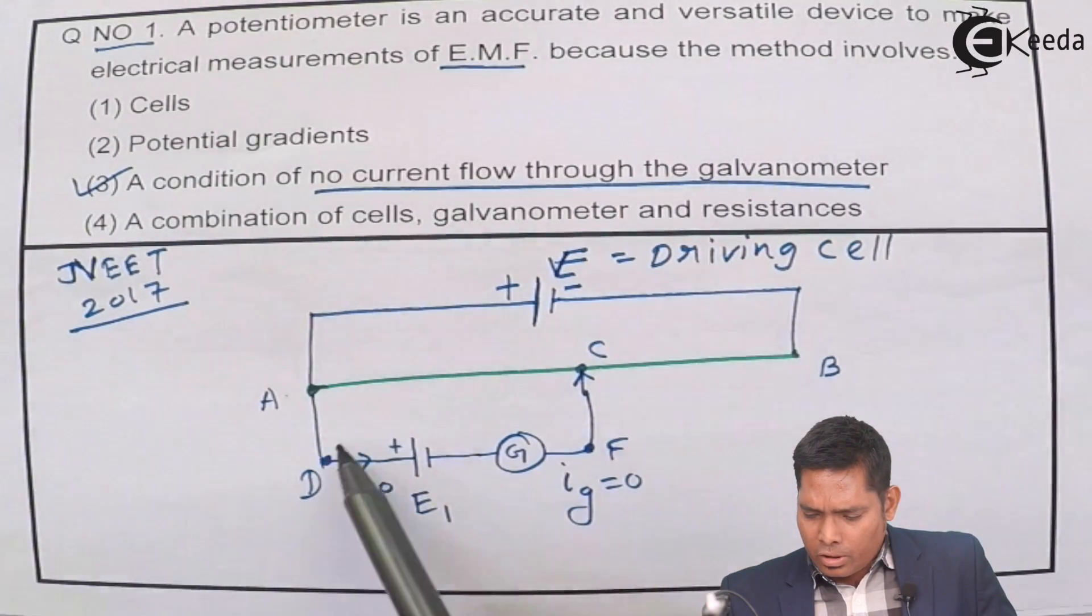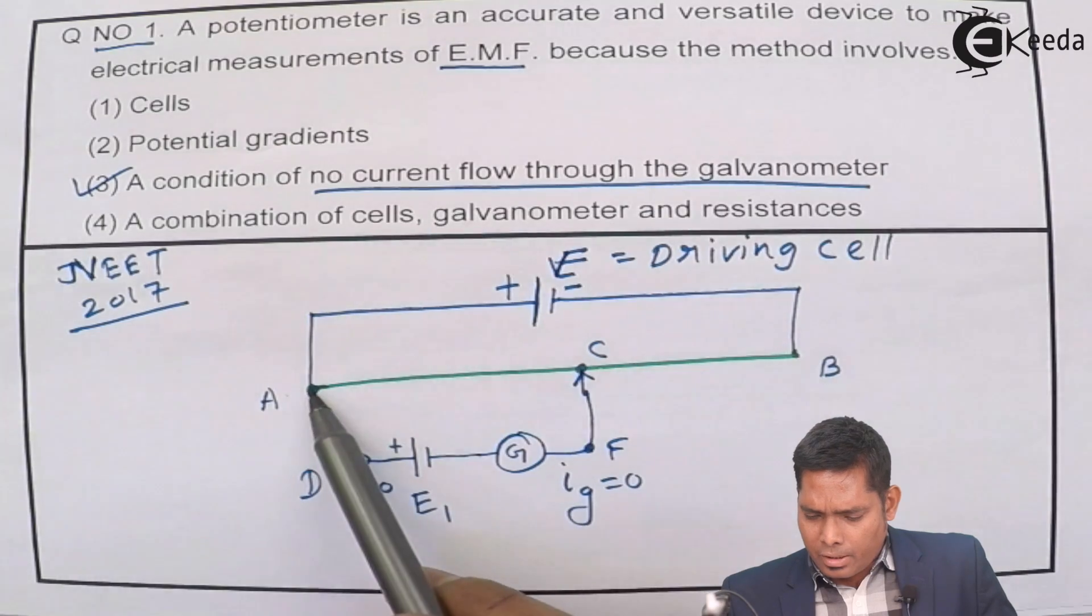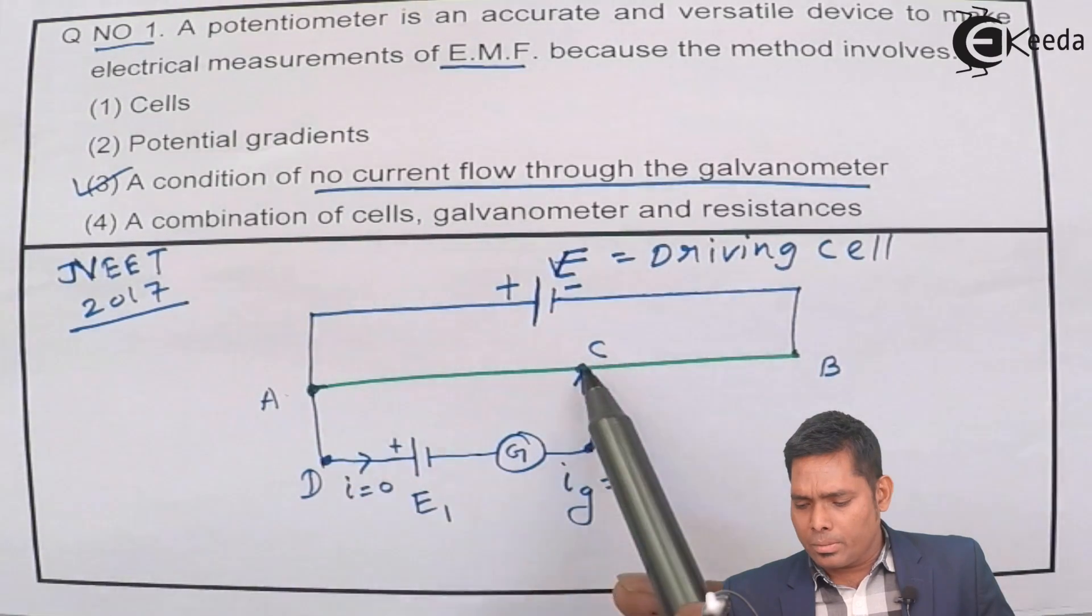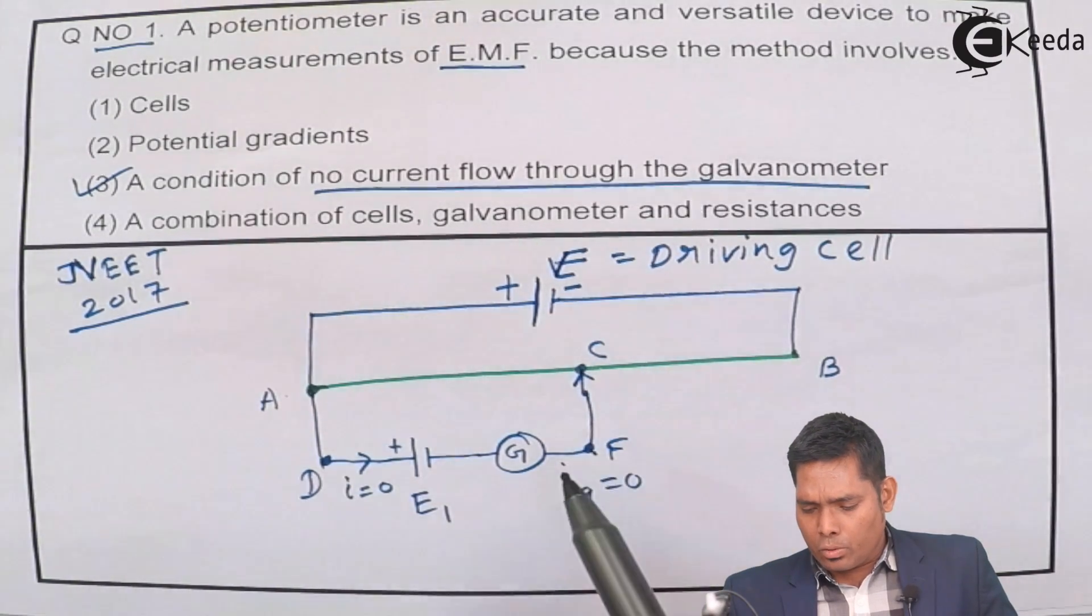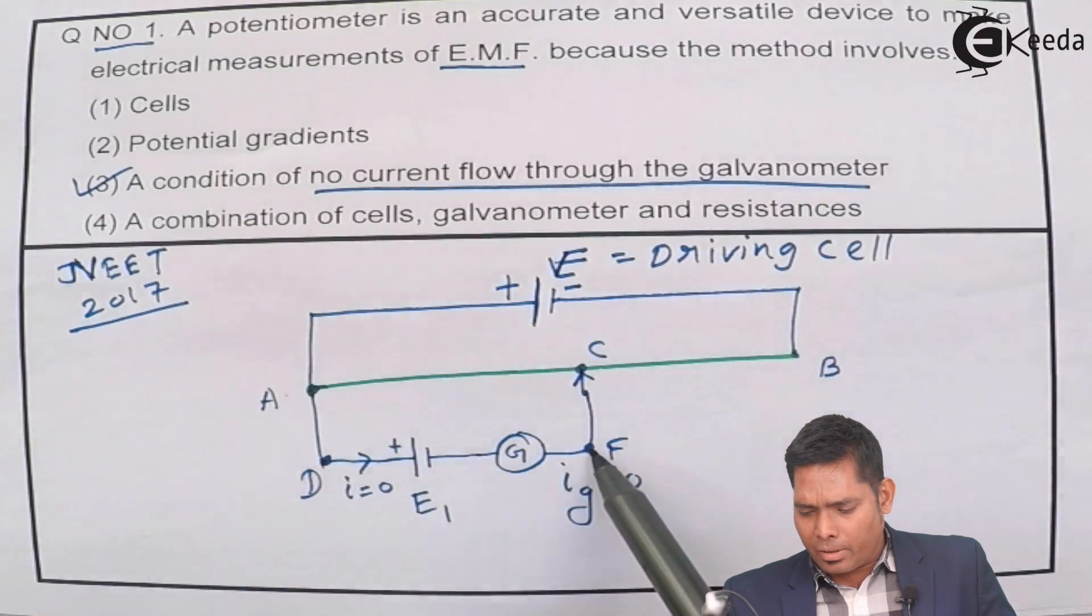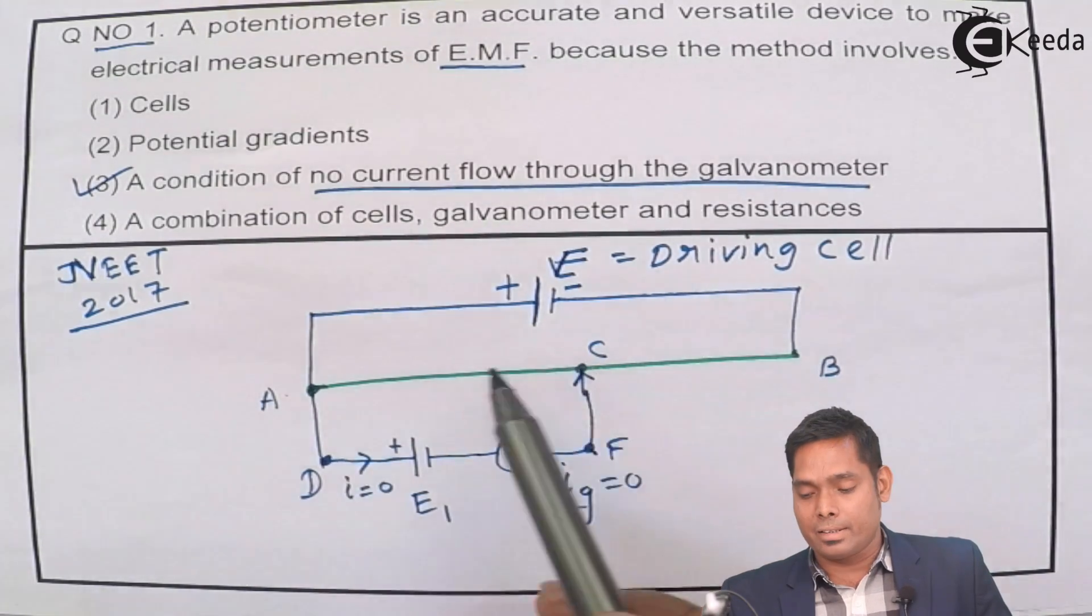So these two, this is just a connecting wire. So the potential at this point and this point must be same and this point and this point must be same. So the potential difference across the battery is same as the potential difference that developed across the wire AC.